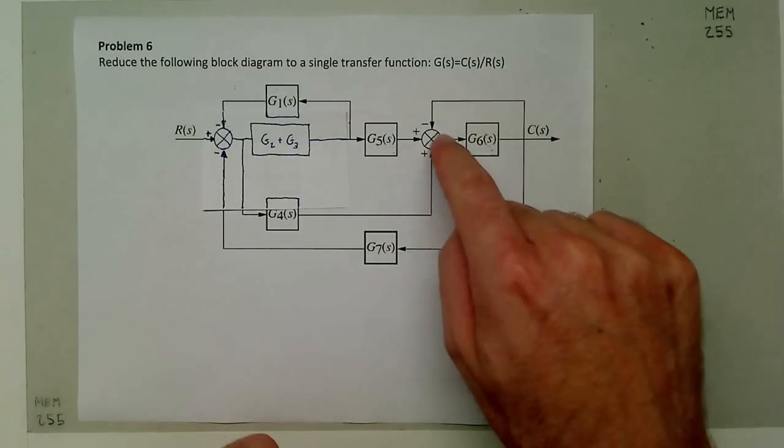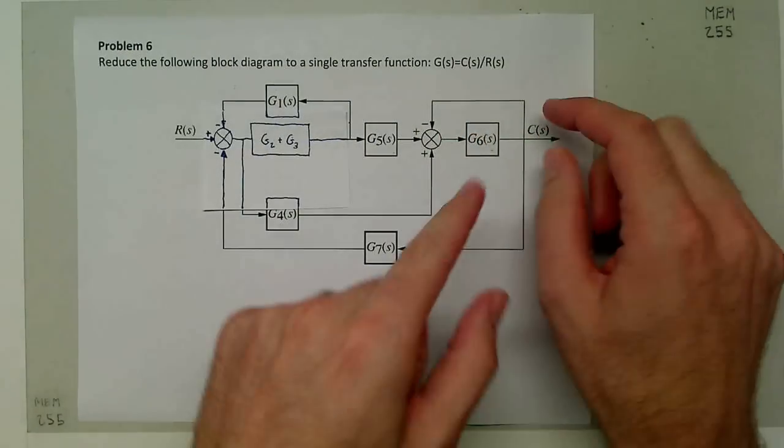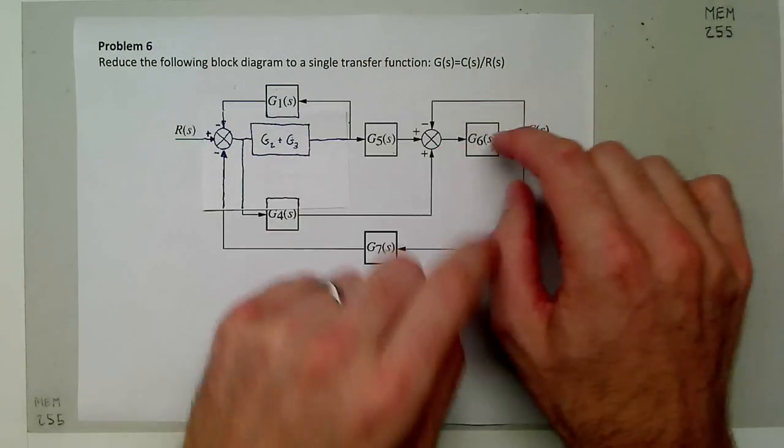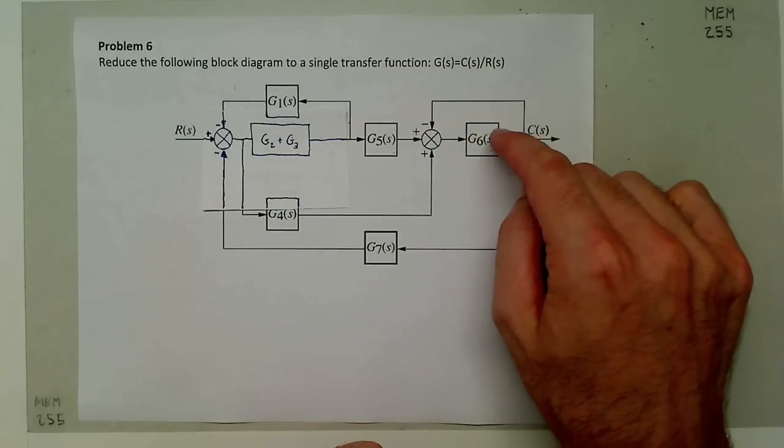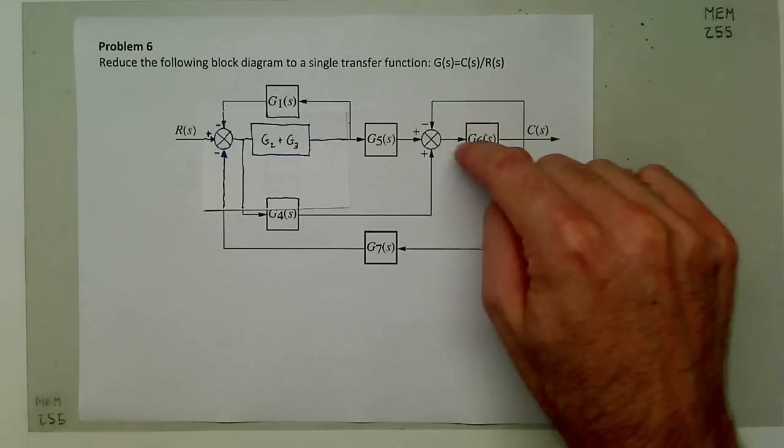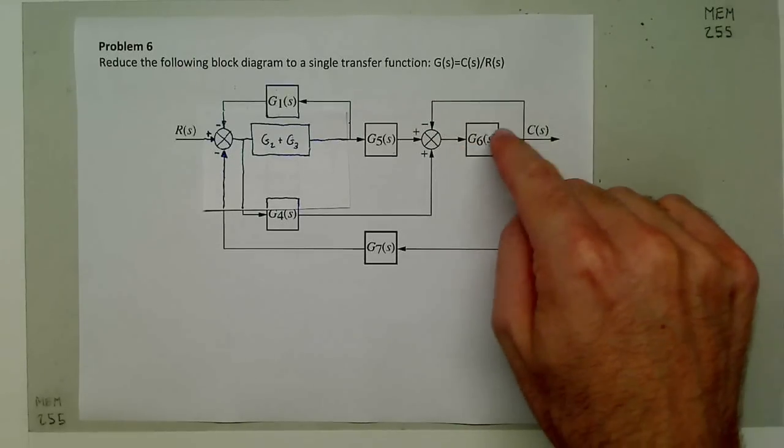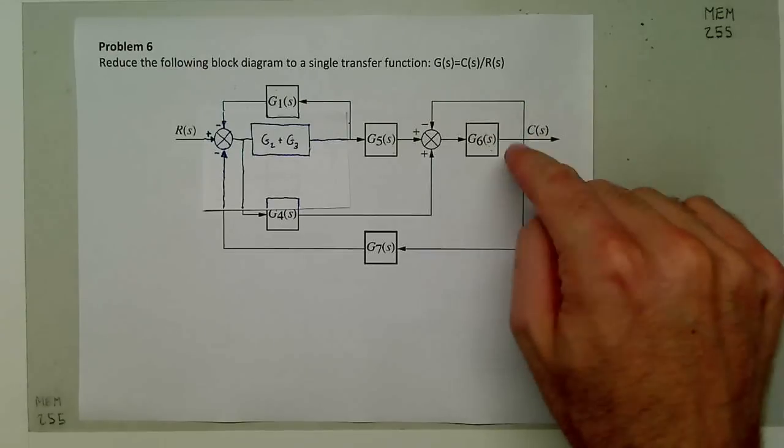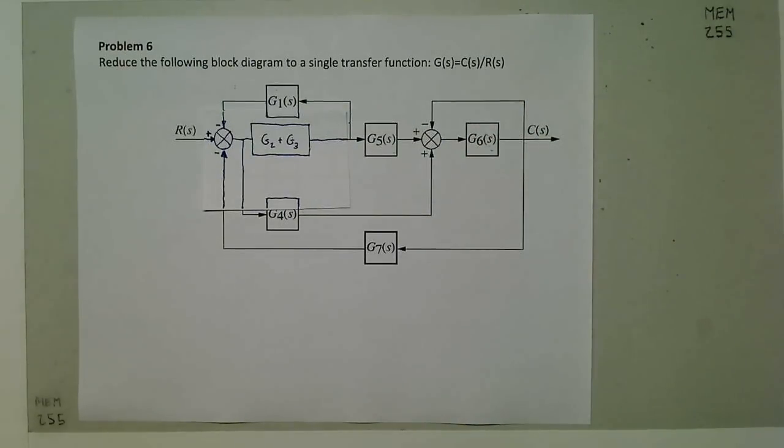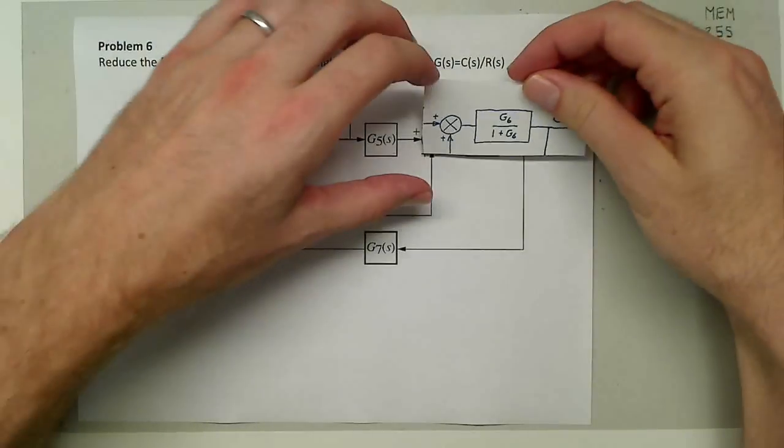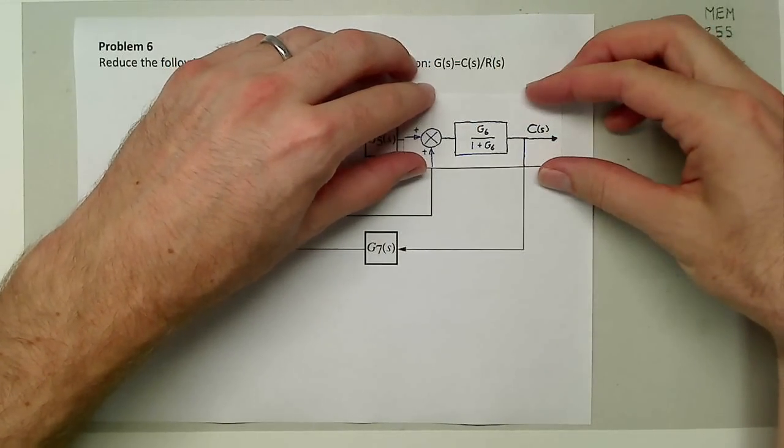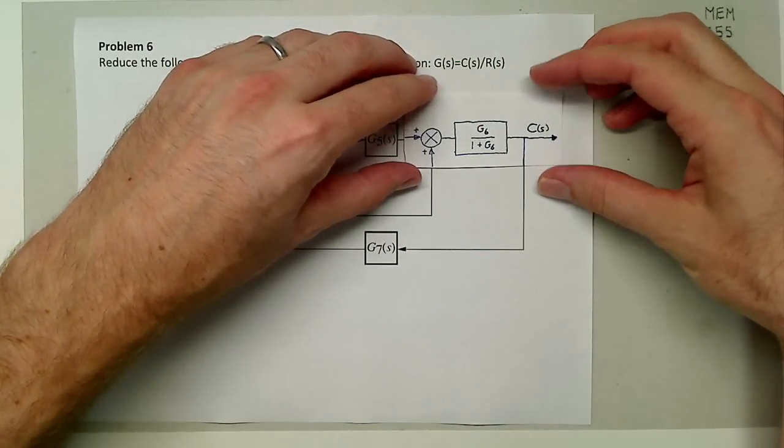My second step: this loop at the end here, g6, is actually a small feedback loop by itself. I can break this out with the feedback gain equation, which is g over one plus gh. The feedback gain h here is one, the forward gain is g6, so I'll replace that with this transfer function and just give me one gain block right there.